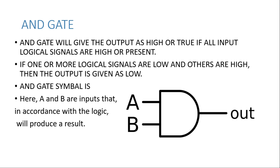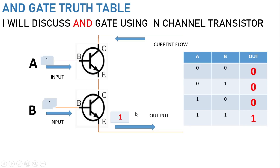AND gate: the AND gate will give the output as high or true only if all input logic signals are high or present. In case two or more signals are in a high condition, then only the output will be high. If one or more logical signals are low and others are high, then the output will be low. Here is the symbol of the AND gate.